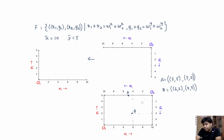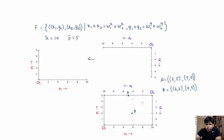Now let us do the example that we discussed in the previous video, and let me show you how to present those allocations in an Edgeworth box. In the previous video, individual 1's endowment of x and y were 4 and 4 respectively, and individual 2's endowment of x and y were 6 and 4. So the total amount of x in the economy was 10 and the total amount of y in the economy was 8, and we saw that allocations A, B, and C were feasible.